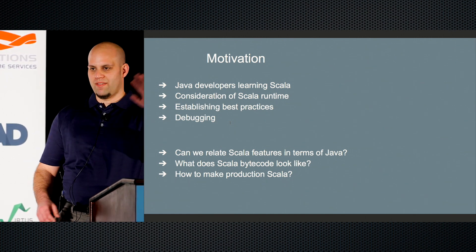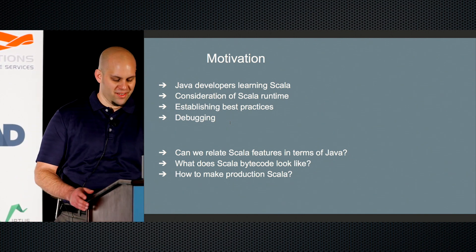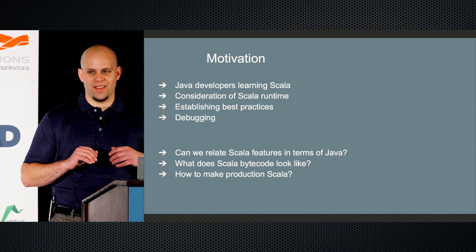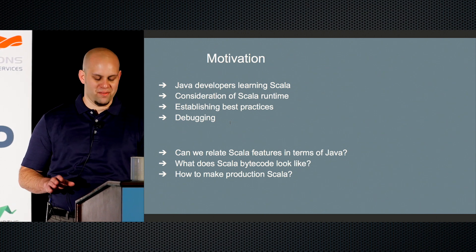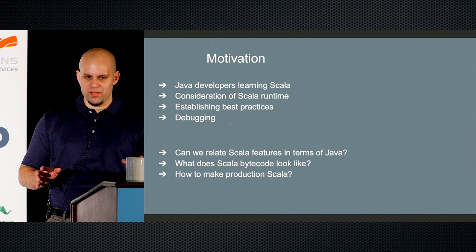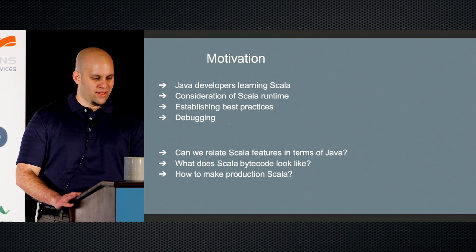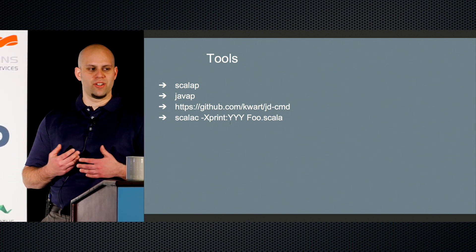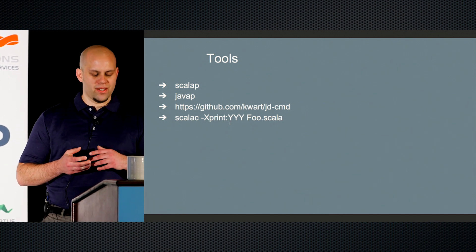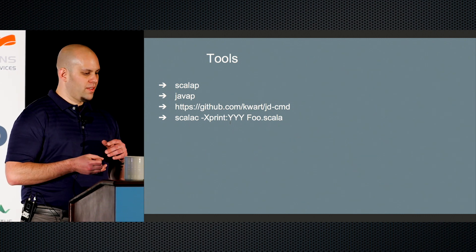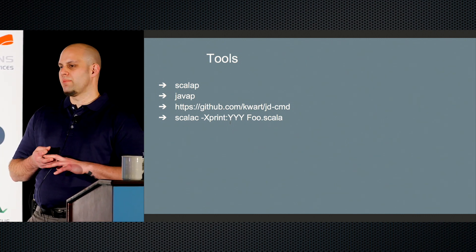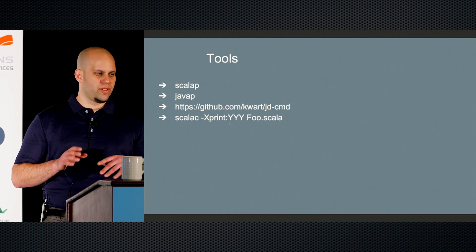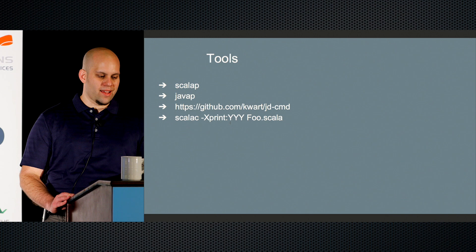In order to understand how the Scala compiler works, we can reverse-engineer the .class files that come out. We can do that using scalap (the Scala profiler), the Java profiler (javap), and any decompiler. I picked JD-CMD just because it has a nice command-line interface. There's also JD-GUI which has a browser you can use, as well as all the Scala commands. I encourage you to read through the documentation about scalac and the different options for -print, which will go through the entire list of compiler options.